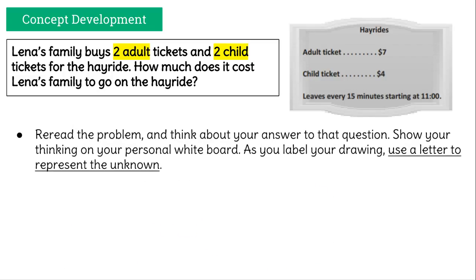Reread the problem one more time and think about your answer to that question. Show your thinking on your whiteboard or on your desk. As you label your drawing, use a letter to represent the unknown. Draw out this problem in some way — a diagram, a number bond, something that's going to help you solve this — and make sure you use a letter to represent the answer we're trying to get. Go ahead and pause the video until you're ready, then press play.